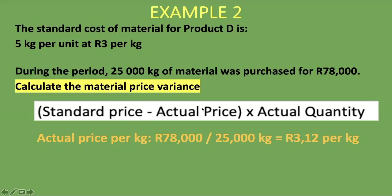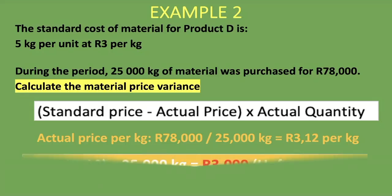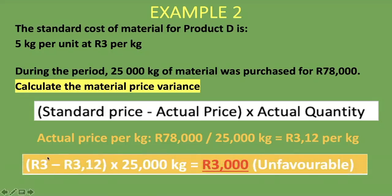We have everything we need: standard price is 3 rand, minus the actual price of 3 rand 12 cents, multiplied by the actual quantity of 25,000 kg. Here is the calculation: 3 rand minus 3 rand 12 cents, multiplied by 25,000 kg — giving us 3,000 rand unfavorable.